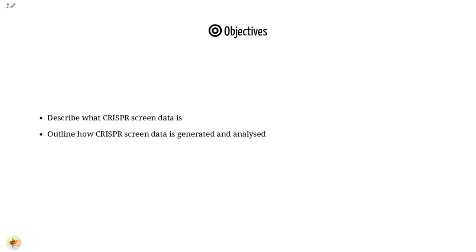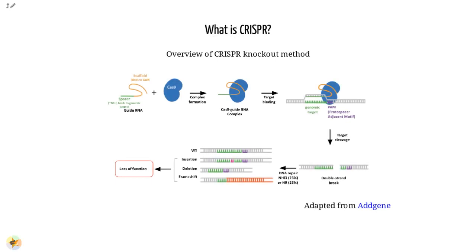This tutorial will describe what CRISPR screen data is and outline how CRISPR screen data is generated and analyzed. CRISPR stands for clustered regularly interspaced short palindromic repeats. It's a bacterial immune system that has been modified for genome editing.